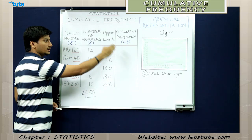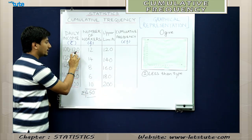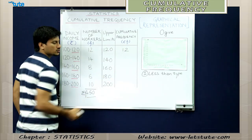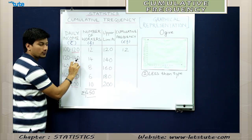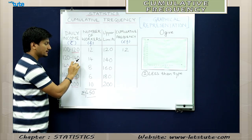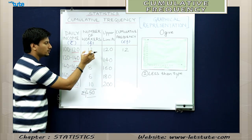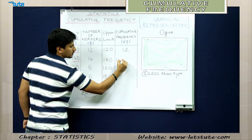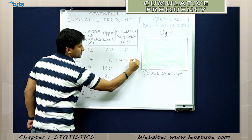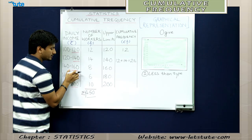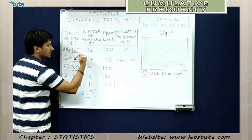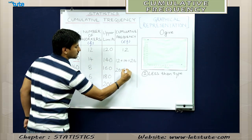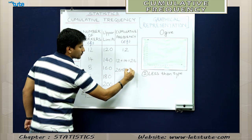Now let's calculate the cumulative frequency. The frequency up to 120 is 12, so the cumulative frequency for the first group is 12. To calculate the cumulative frequency up to 140, we add the frequencies from 100 to 140 — that is, the first and second groups: 12 plus 14 gives us 26. Similarly, the cumulative frequency up to 160 covers 100 to 160, so 12 plus 14 plus 8: that is 26 plus 8, which gives us 34.